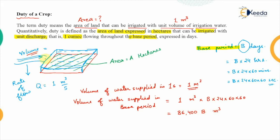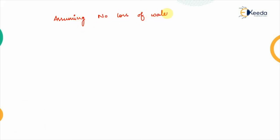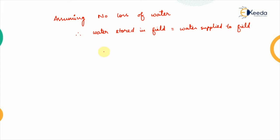Assuming there is no loss in terms of evaporation or percolation — zero loss — the total amount supplied is stored in the field. The assumption is that there is no loss of water during supply. Therefore, water stored in the field equals water supplied to the field, which we have already calculated as 86,400 × B cubic meters.